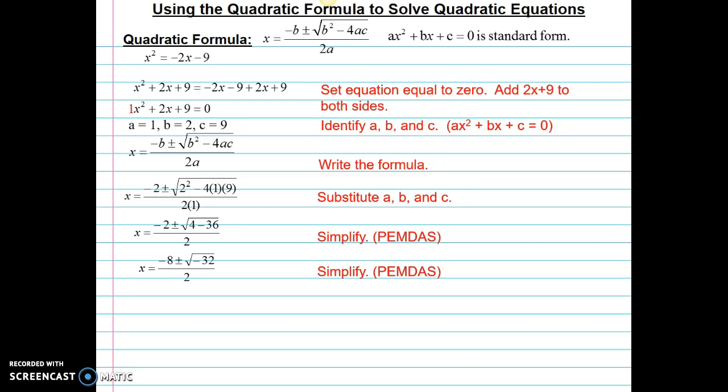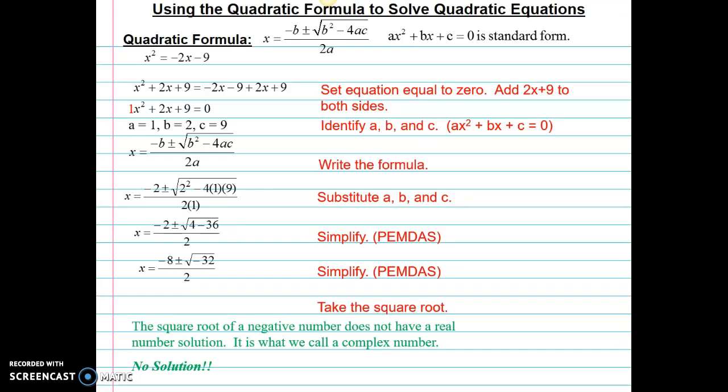Next, I'll subtract 4 minus 36 and get negative 32. So the next step would be to go ahead and simplify that square root. But when I try to take the square root of a negative number, I get a no solution on my calculator. That's because the square root of a negative number does not have a real number solution. It's what we call a complex solution. So for this one, we would say there is no solution.